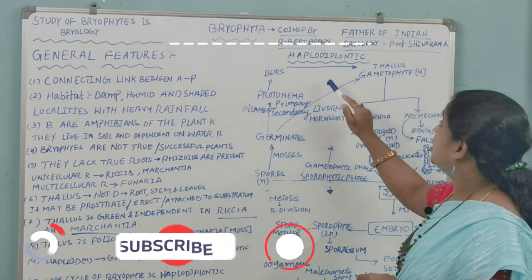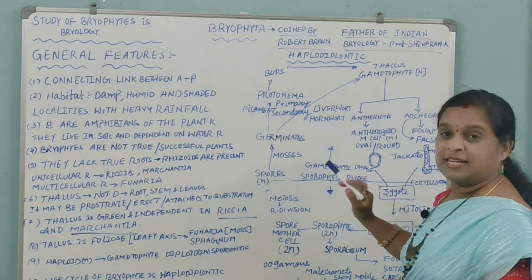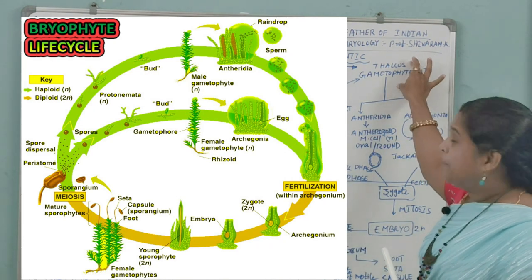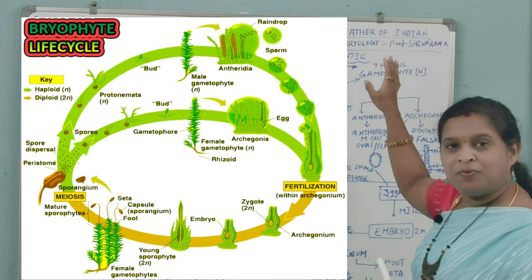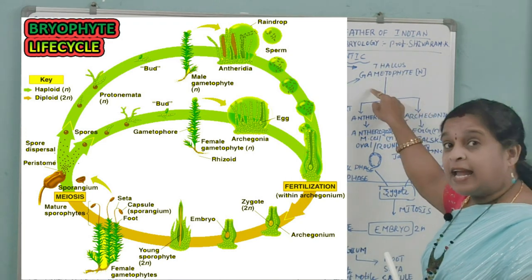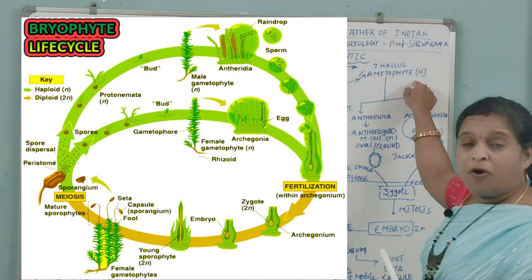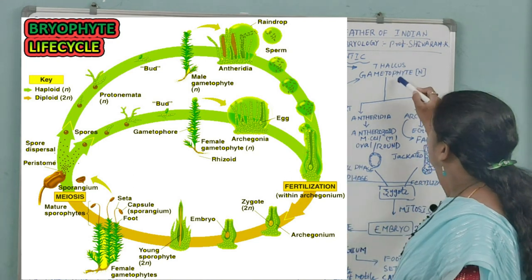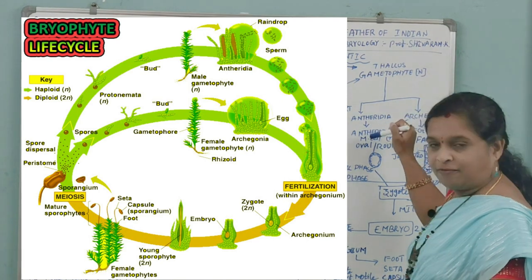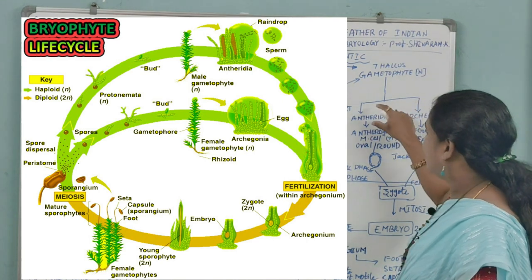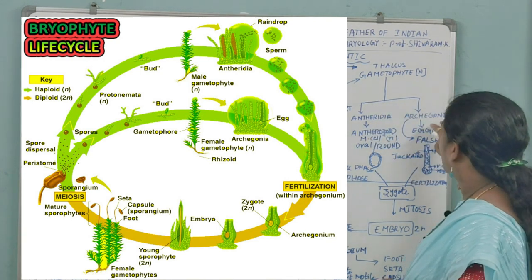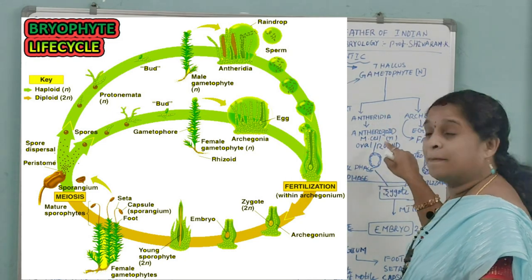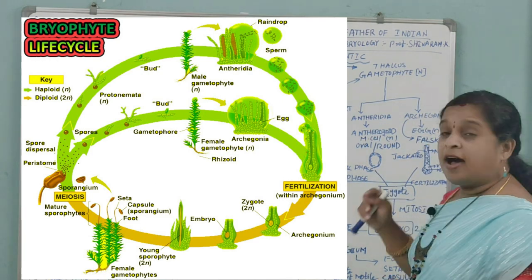In studying the life cycle of bryophytes, we begin with the thallus, which is not differentiated into root, stem, or leaves. It is referred to as the gametophyte and is haploid (n number). This gametophytic haploid thallus produces antheridia in one species and archegonia in another. Antheridia are produced by antherozoid mother cells.